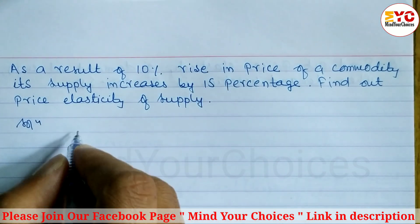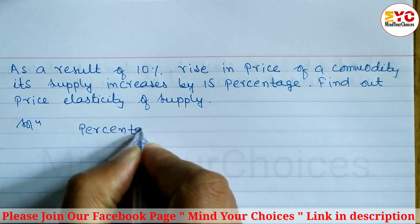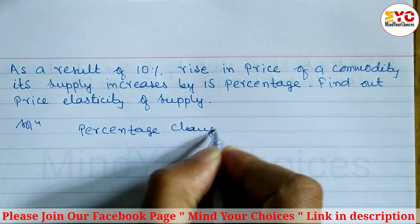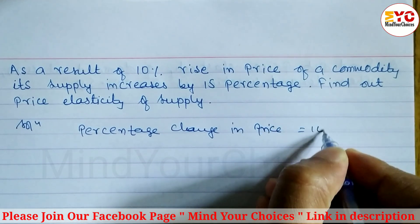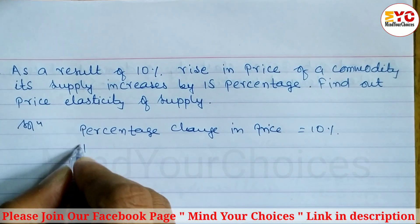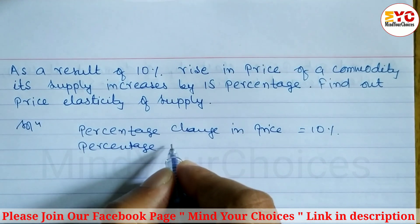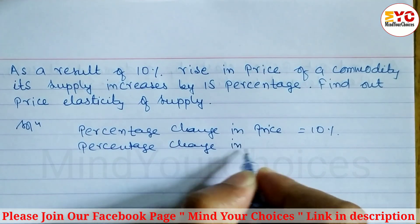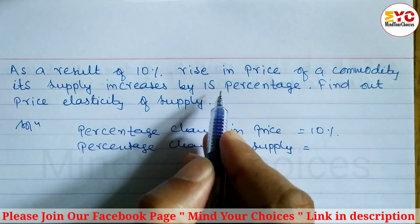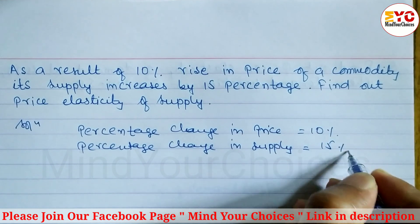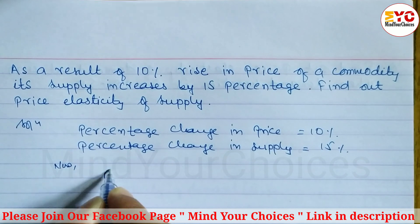Let's take a start. The rise in price is 10, so percentage change in price is equal to 10 percent. And next, percentage change in supply is equal to 15 percent. We have to find out the price elasticity of supply.